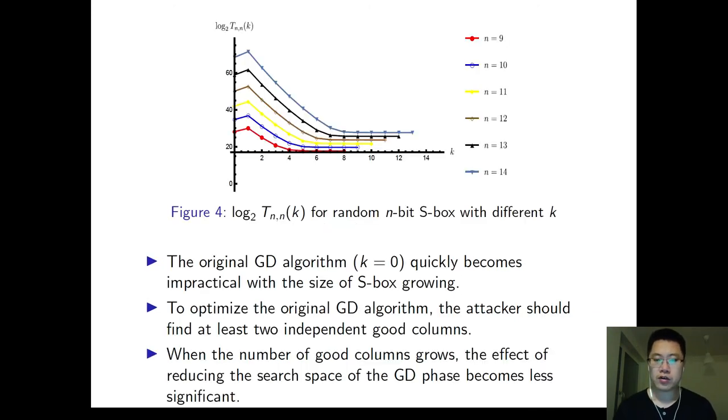In this figure, we show the complexity curve for random N-bit S-Box with different k. The parameter k here is for the number of good columns. The original GD algorithm, when k takes 0, quickly becomes impractical with the size of S-Box growing.